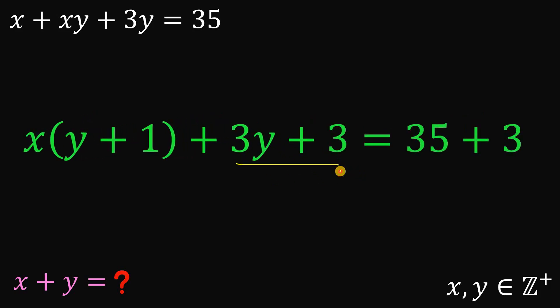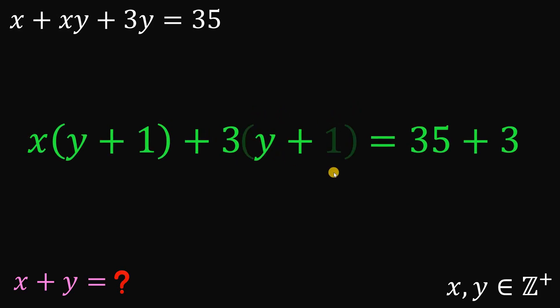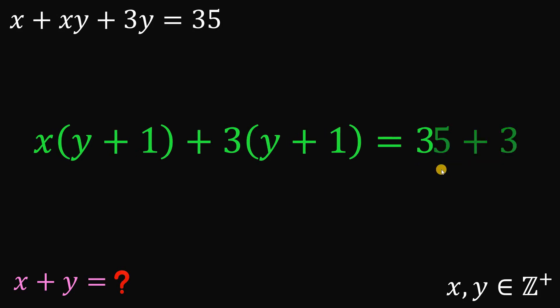Now, 3y plus 3, again we can factor this out. We can factor the common factor 3. So this is just 3 multiplied by y plus 1. And we can add 35 and 3. This is just 38.